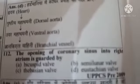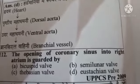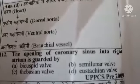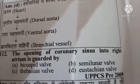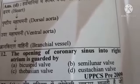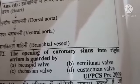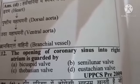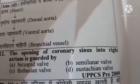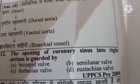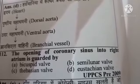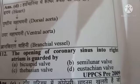Next question: the opening of coronary sinus into right atrium is guarded by — Option A: bicuspid valve, Option B: semilunar valve, Option C: Thebesian valve, Option D: Eustachian valve. The correct answer is Option C: Thebesian valve.